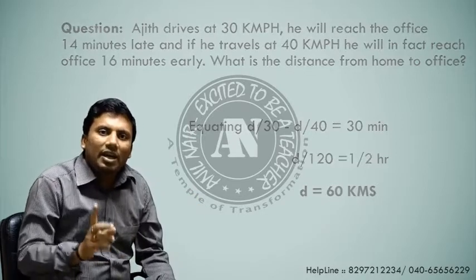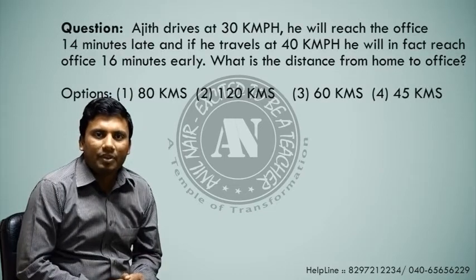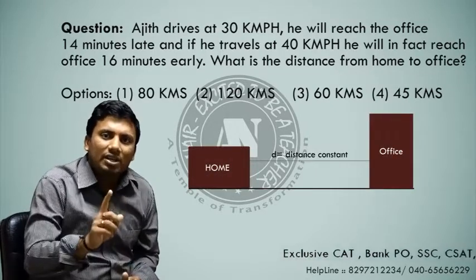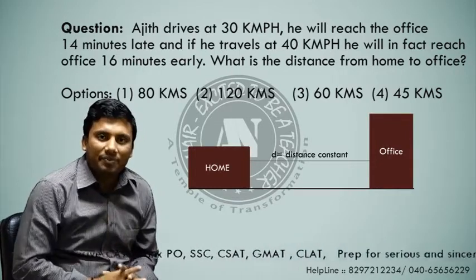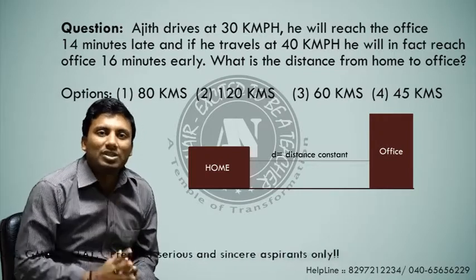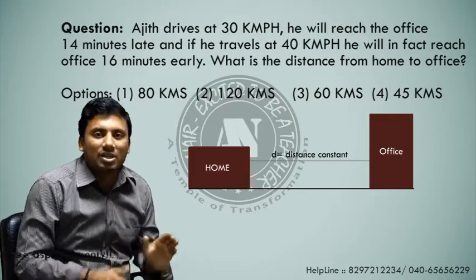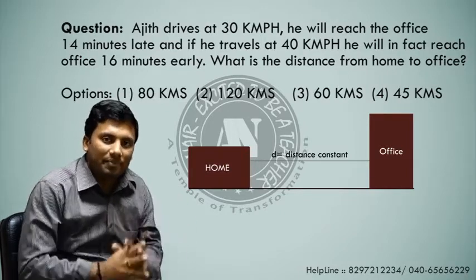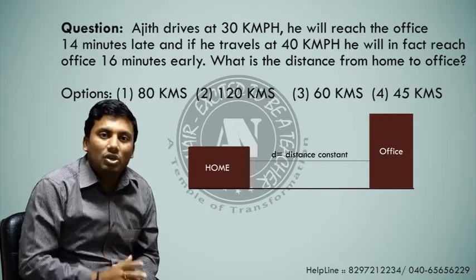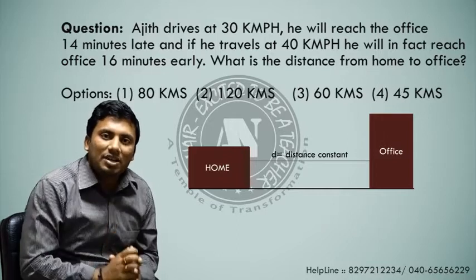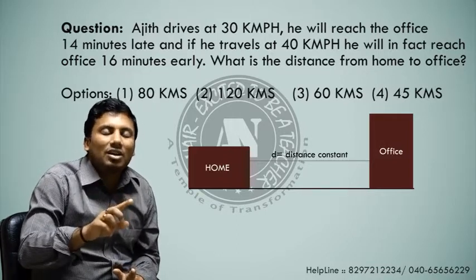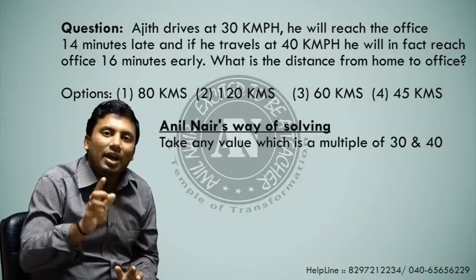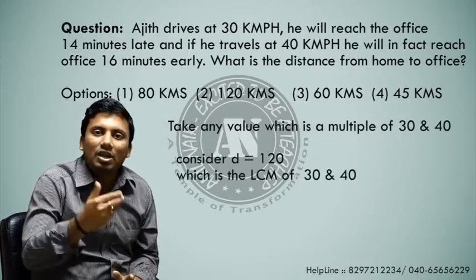Now let us look at an innovative way to solve this question. The distance is constant — a fixed quantity. Instead of solving using variables, let us convert the variable into a constant value using a dummy value for d to get the answer in less time and space. We will take a value that is a multiple of the speeds given — 30 and 40 — so I take d as the LCM of 30 and 40, which is 120 kilometers.